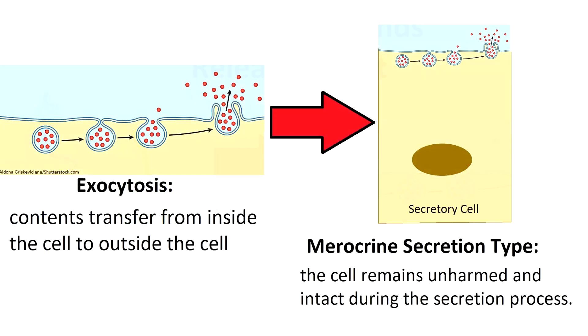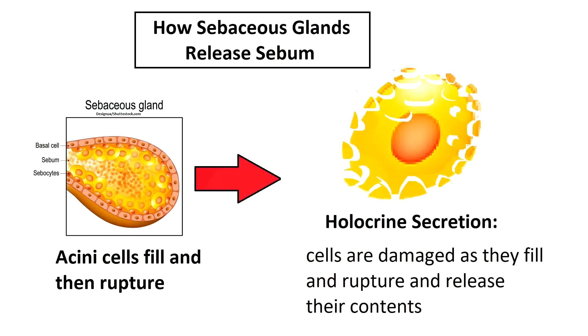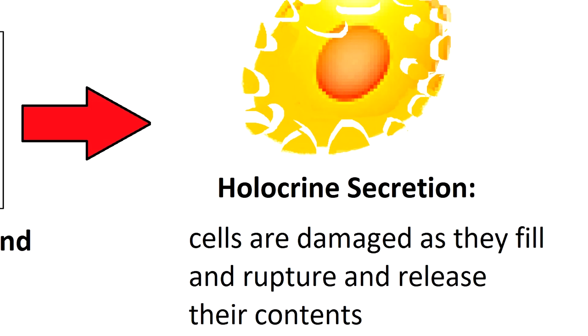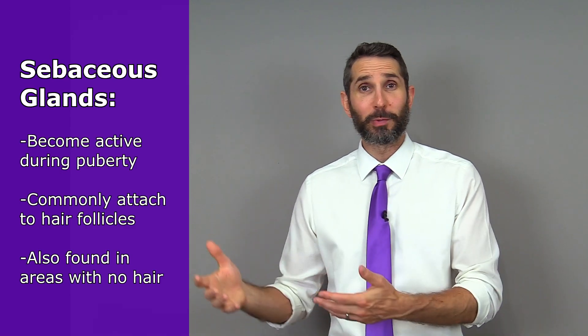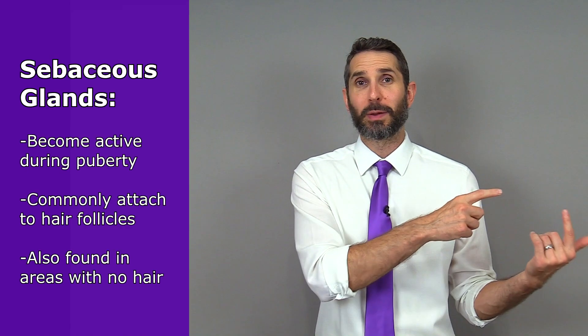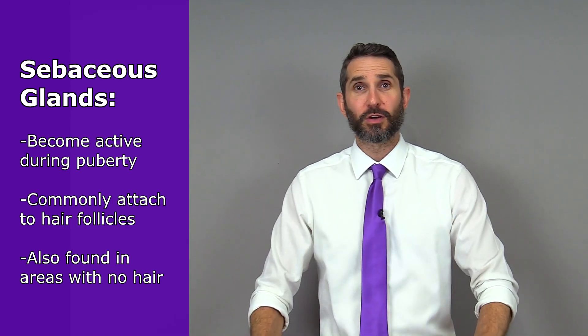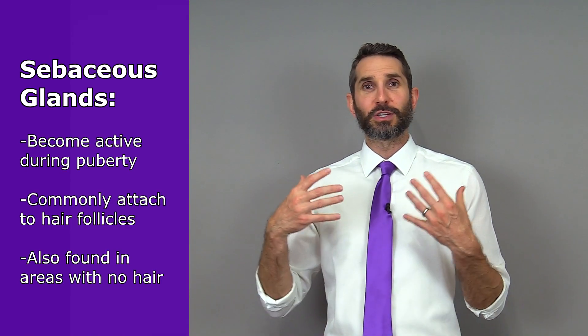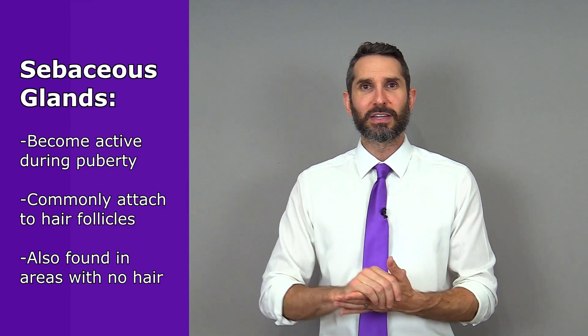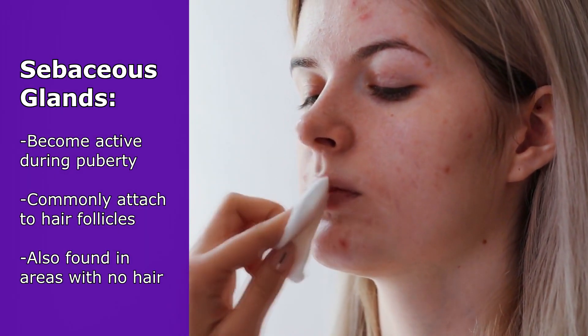Unlike sweat glands, which use exocytosis via merocrine secretion where the cell stays intact, sebaceous glands are different — the cell ruptures and breaks apart, so little bits of the cell are mixed in with the sebum. This is called holocrine secretion. Sebaceous glands become active during puberty, which is why your skin gets oily and you tend to get acne when you hit puberty.